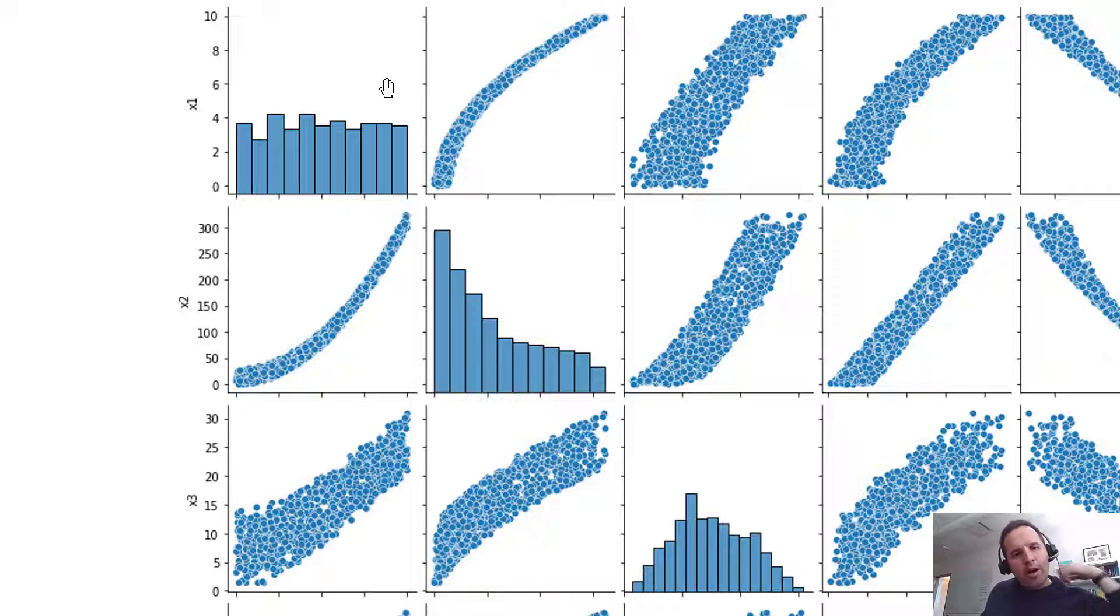So we have X1 on top. Here in this first row and first column, X1 is just matched up against itself. So rather than plotting X1 against itself, instead what they do is they give us a histogram of the X1 data. You can see X1 has a fairly uniform distribution. Going over, we have now X1 on the Y axis versus X2 on the X axis, and you can see how X1 relates to X2.